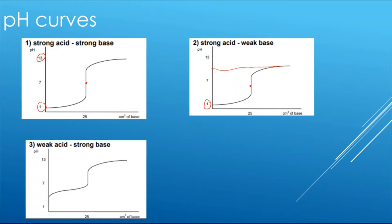For a strong base added to a weak acid, we would not start at pH 1 or 2 because it's a weak acid — it would be above 2. And because it's a strong base, we finish off at around pH 13 to 14 when the base is in excess. The neutralization would occur above pH 7.